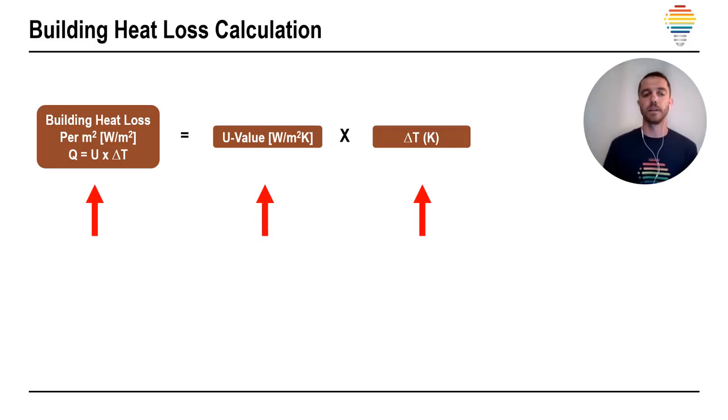For example, if our U value is 5 watts per square meter and our delta T is 30 Kelvin, for example, inside is 20 degrees, outside is minus 10, we have 150 watts per square meter heat loss in that building.